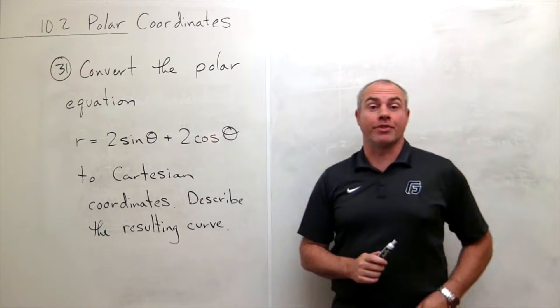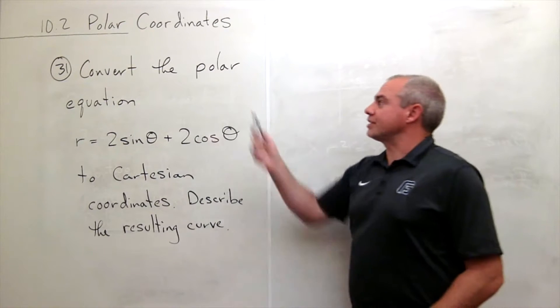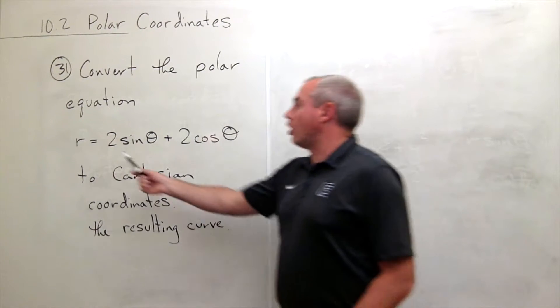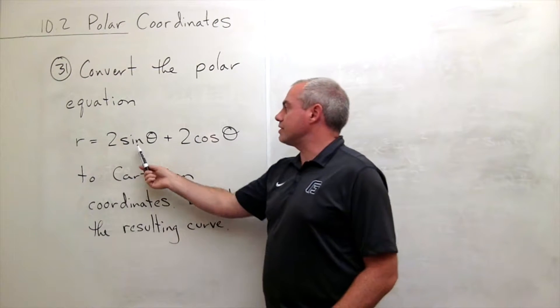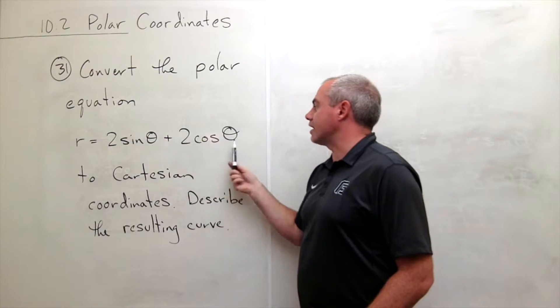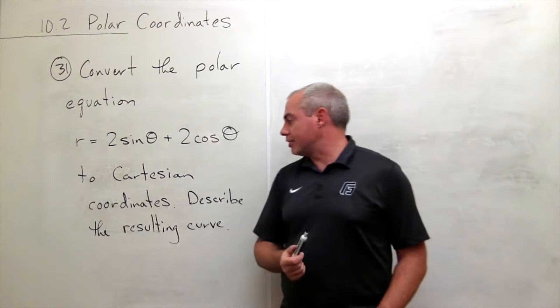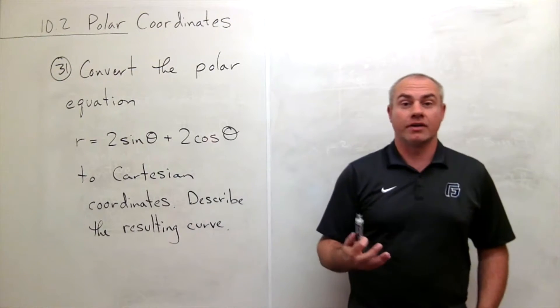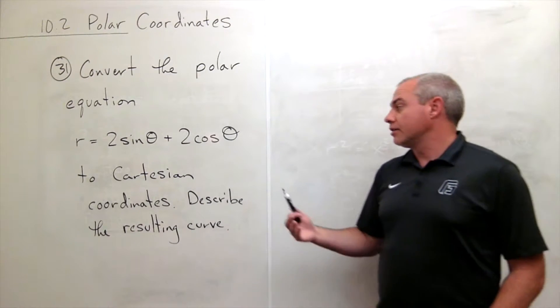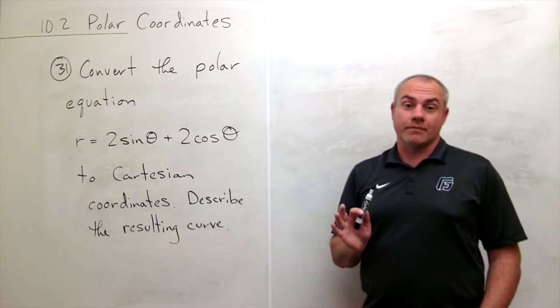I'm a calculus professor and today I'll be talking to you about polar coordinates. In problem number 31, we'd like to convert the polar equation r equals 2 sine theta plus 2 cosine theta to Cartesian coordinates and then describe the resulting curve that we get in Cartesian.